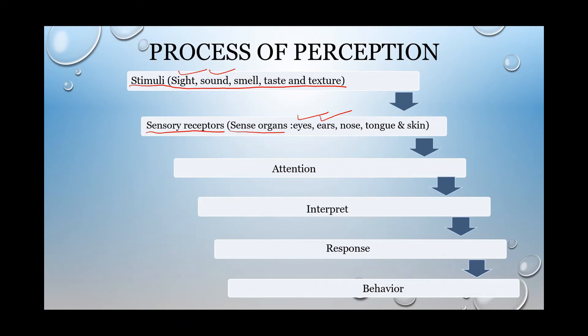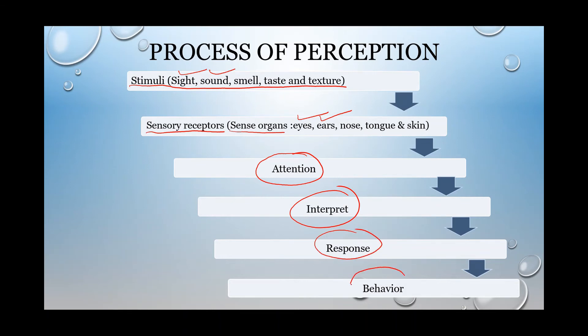When the sense organs receive a stimulus, attention is directed towards it. When you hear beautiful music, all of a sudden you focus on that and try to listen to what it is all about. Then you interpret it, then you respond, and then you behave according to that. This is the process of perception.